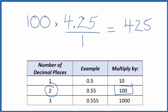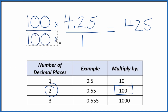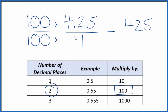But we can't just multiply the numerator by 100. We also need to multiply the denominator by 100. That's because when we divide 100 by 100, it's just 1 — so we're really just multiplying by 1. We don't change the value, just the way it's represented.